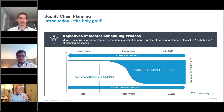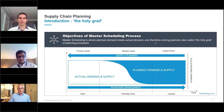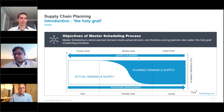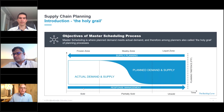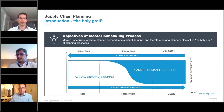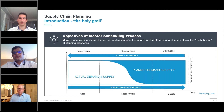This overlapping — going from planned to actuals — is what we call the holy grail. You can see the liquid zone, the slushy zone, and the frozen zone on the supply planning side. We are slowly constraining ourselves until the frozen zone, where we must build and assemble at the last level. On the responsive part, we have the sold, the partially sold, and the unsold.